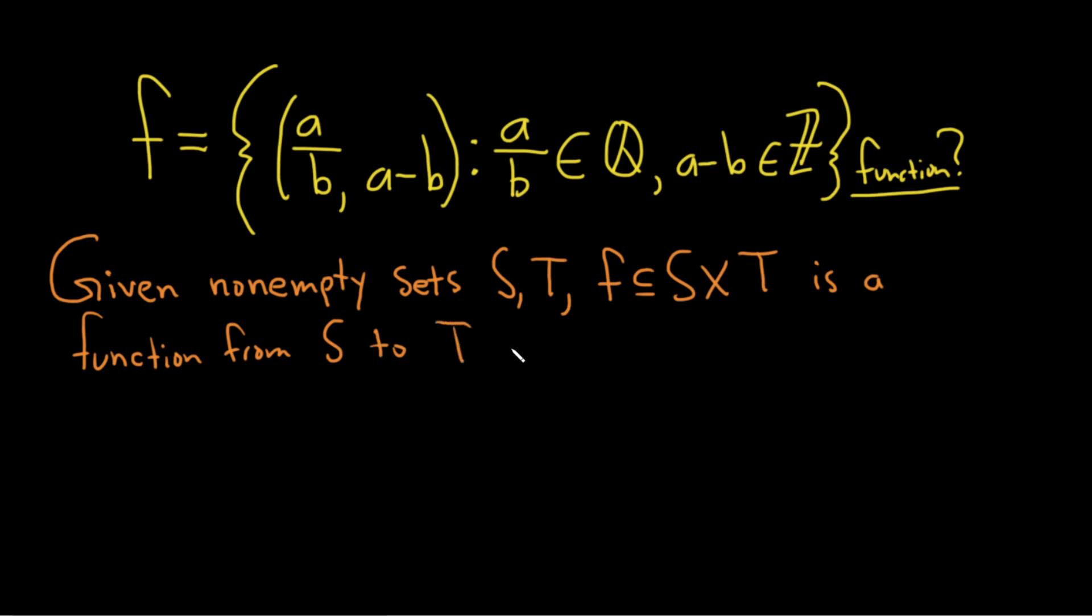If for each element s in capital S, there is a unique ordered pair in the Cartesian product.